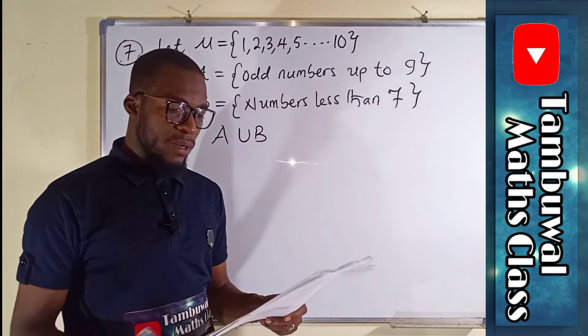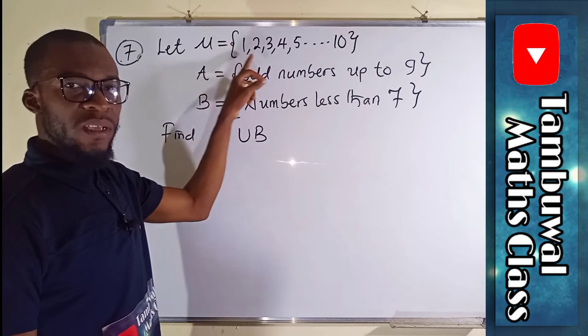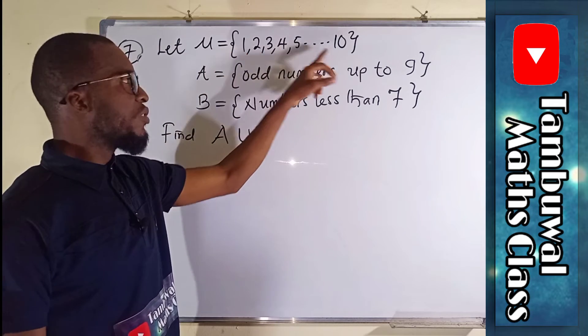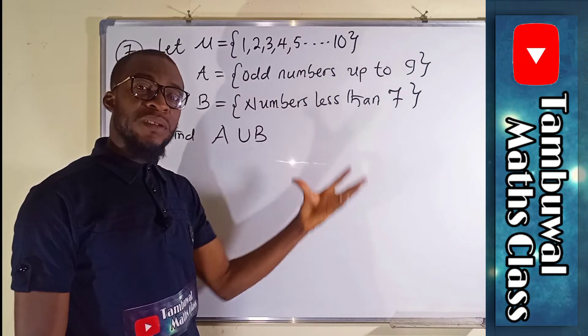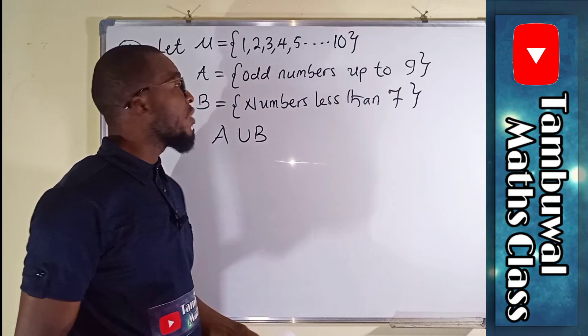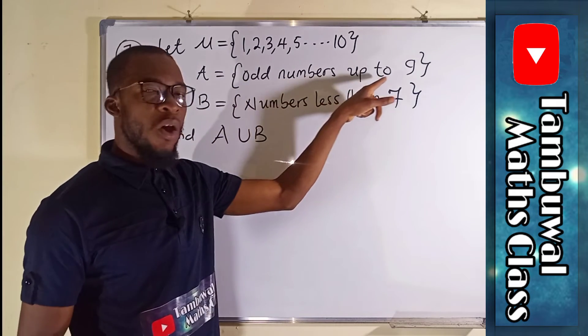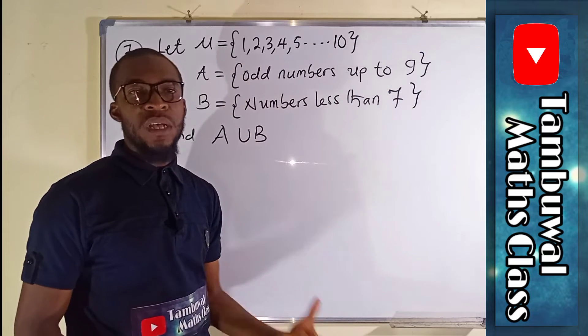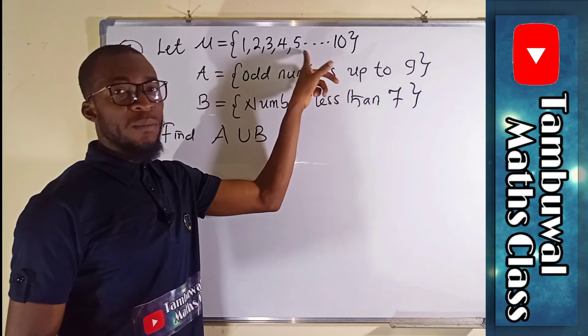Question number seven is a set question. It says let μ be a set of natural numbers from one to ten. This is μ, it represents the universal set. The universal set is that set that contains all other sets in a given question. A is odd numbers up to nine. You know odd numbers are those numbers that are not divisible by two and you are going to sort them out from here.